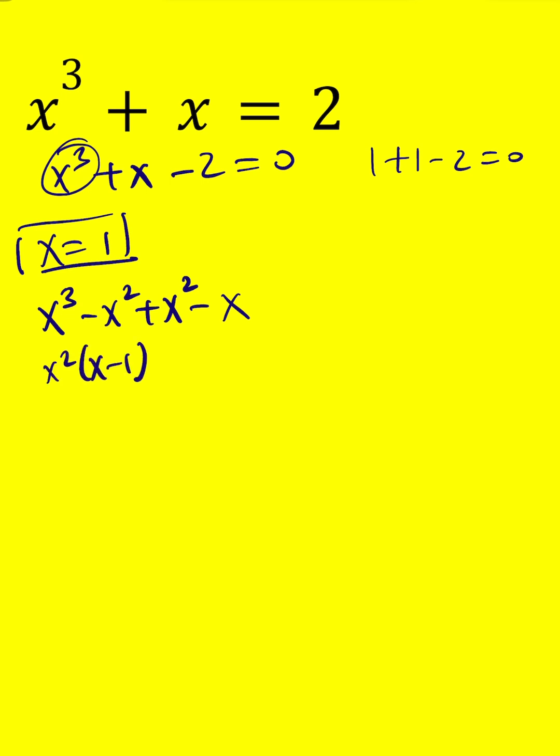To get positive x though, I kind of have to follow up with 2x and then of course minus 2 is the last term. Now this is factorable by grouping, isn't that cool? x squared times x minus 1 plus x times x minus 1 plus 2 times x minus 1.